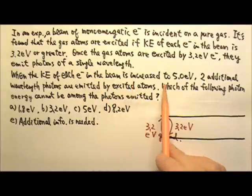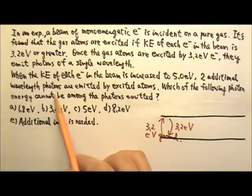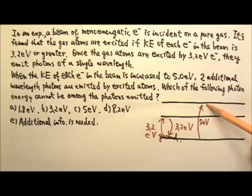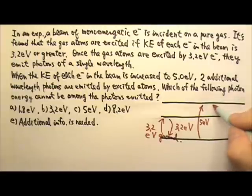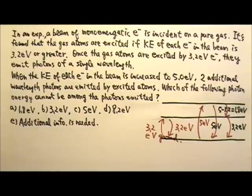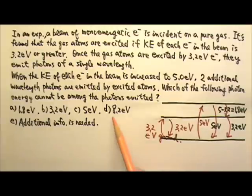When the kinetic energy of each incident electron is increased to 5 eV, two additional wavelength photons are emitted by the excited atoms. This means there must be another energy level that is 5 eV above the ground state. So the excited atoms can go through three different transitions: straight down to the ground state, or down to the intermediate level, and then down again. So the energies of the photons emitted can be 5 eV, 5 minus 3.2 equals 1.8 eV, and 3.2 eV. Therefore the energy that cannot be emitted is 8.2 eV. The answer is D.